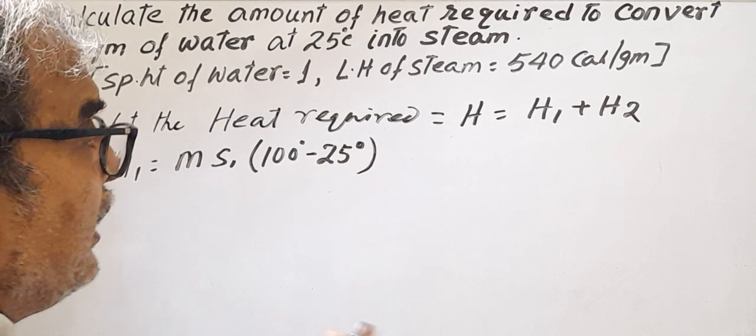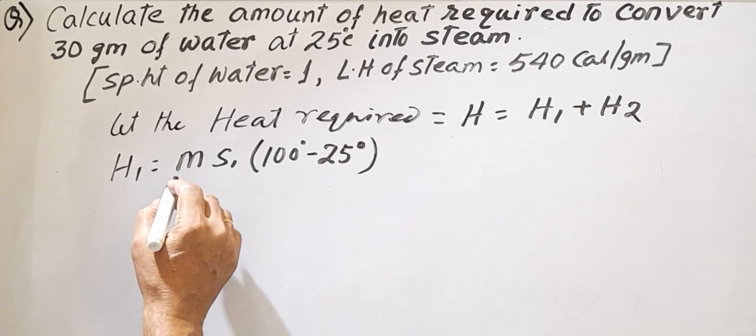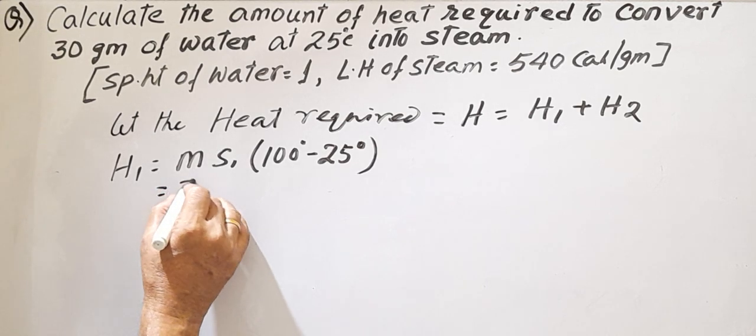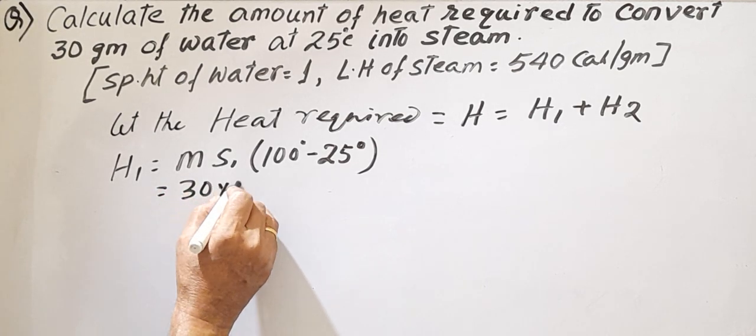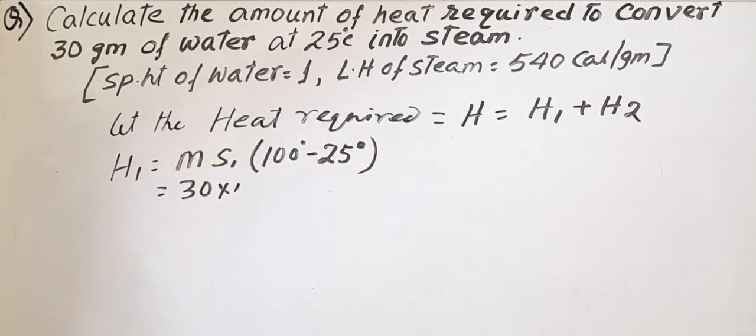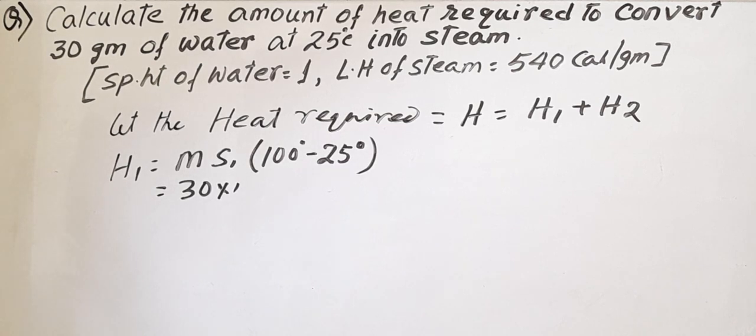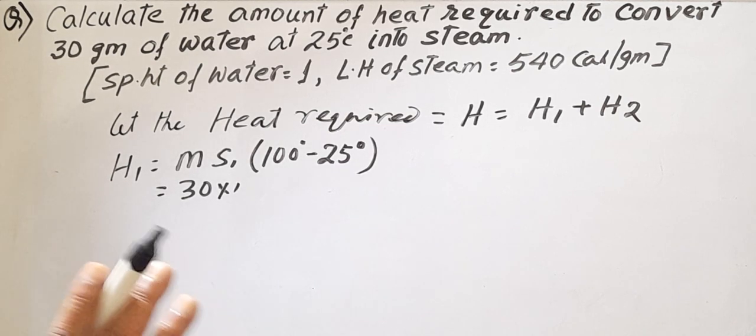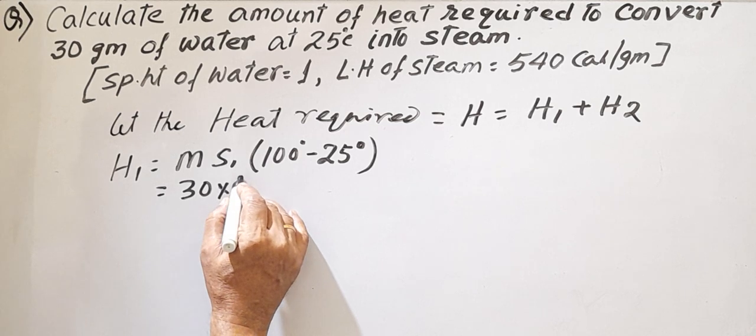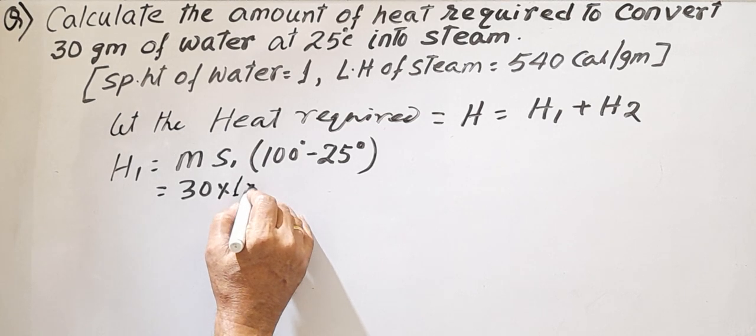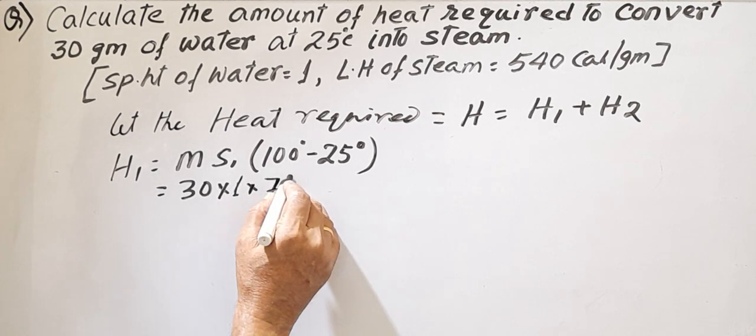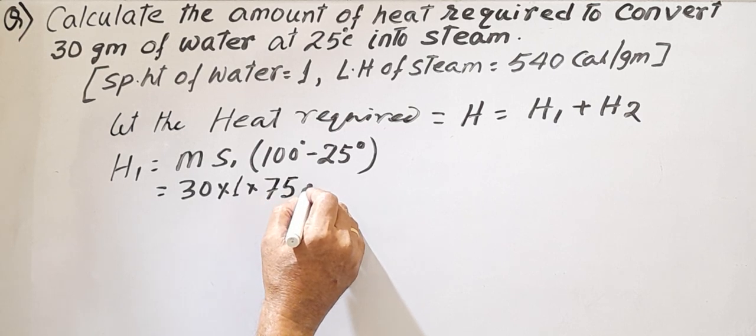So this is 30 into 1. Your specific heat of water is 1, which is given, and latent heat of steam is 540 calories per gram. This is 1 into 75, that means how much it is: 2250 calories.